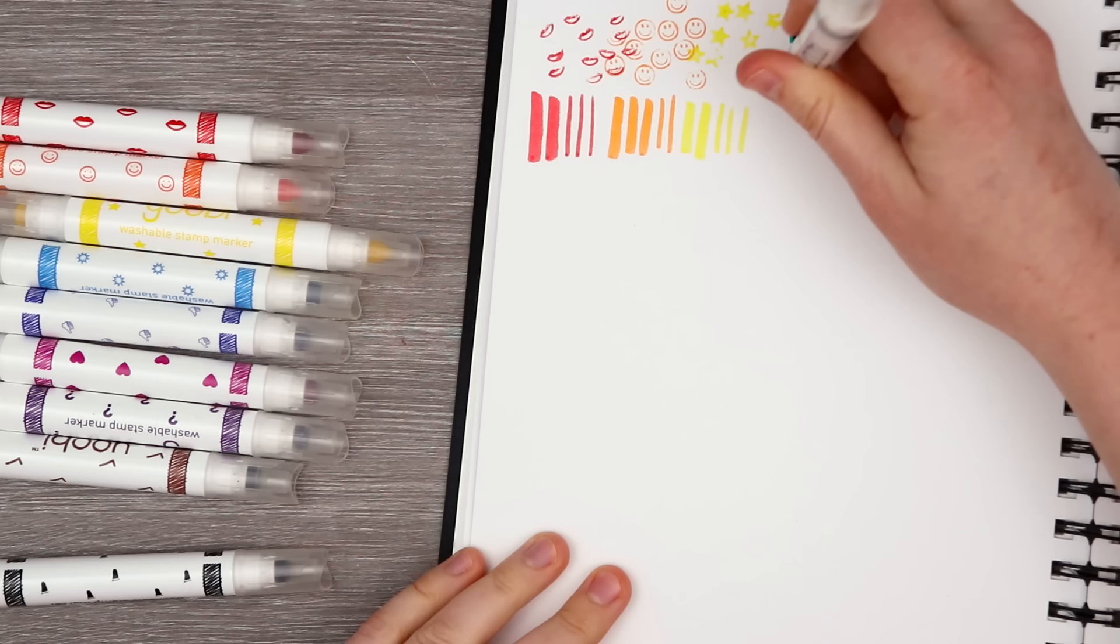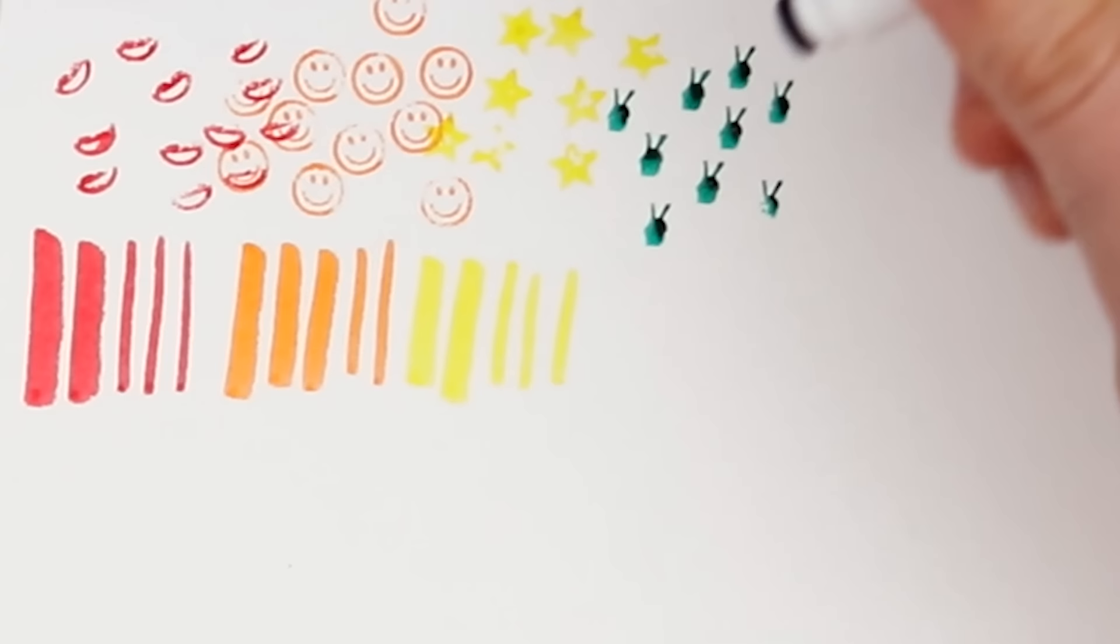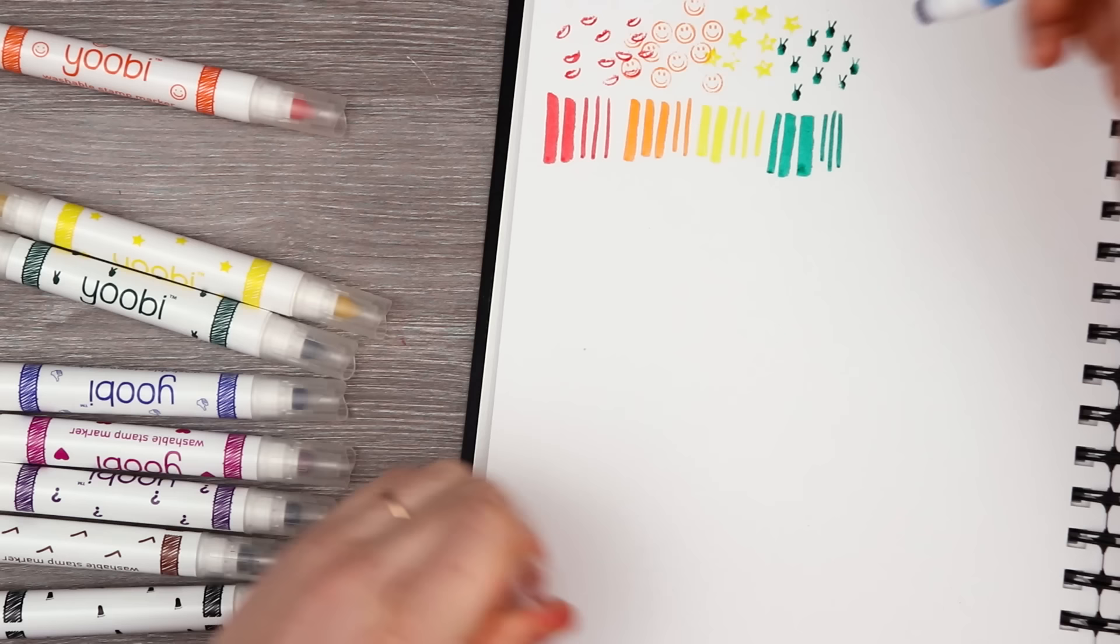Next up, we've got a green. Oh gosh, the green is so juicy - it might be too juicy. It's supposed to be a peace sign, but honestly, I also see the Playboy bunny. So, whoops.